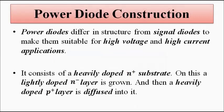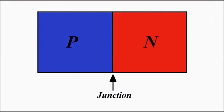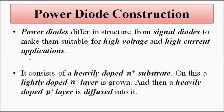The diodes used in power electronic circuits are different in structure from signal diodes. It was necessary to understand a simple PN junction diode first to then understand a power diode. Power diodes and power semiconductor devices in electronic circuits have to handle high voltage, high current, and high power, so some modifications in their design and structure are necessary.